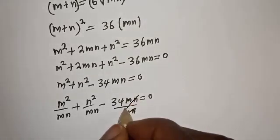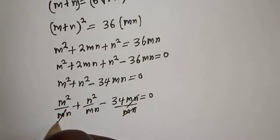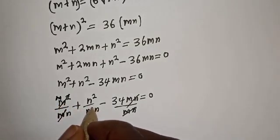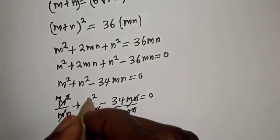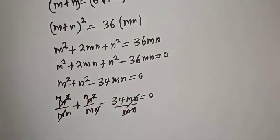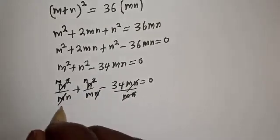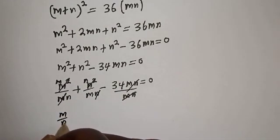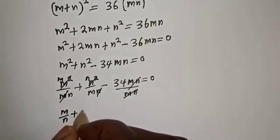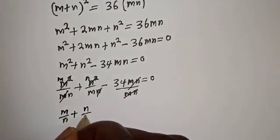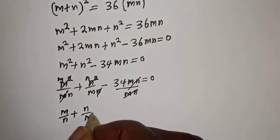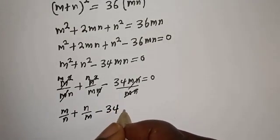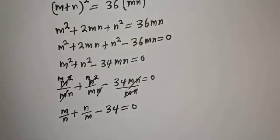After cancelling common factors, we get m over n plus n over m minus 34 is equal to zero.